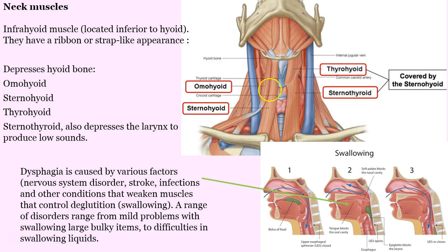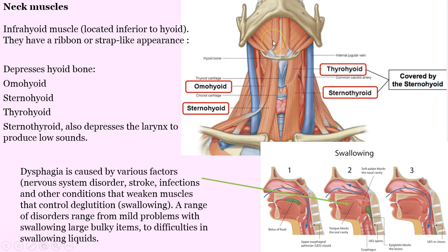Now let's look at the infrahyoid muscles. This looks complicated at first, but it's not so bad. Their action is going to be to depress the hyoid bone. They're antagonists — remember this concept of agonists. The suprahyoid muscles are the prime movers up here elevating the hyoid, and we've got to have someone pulling in the other direction. That's what we have here with the infrahyoids. They're strap or ribbon-like muscles.